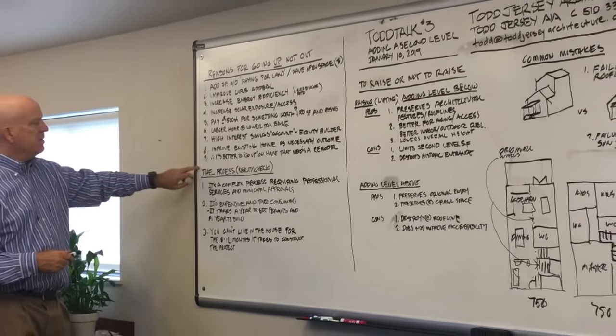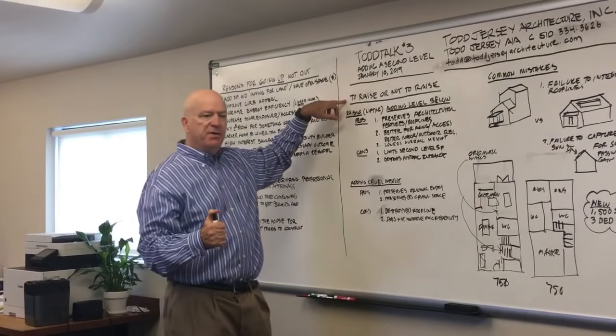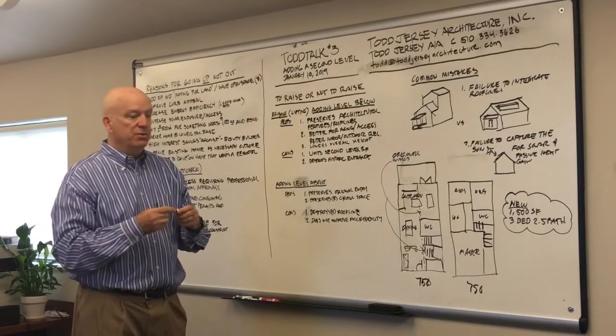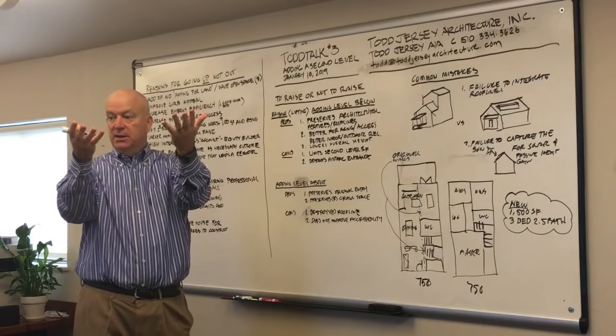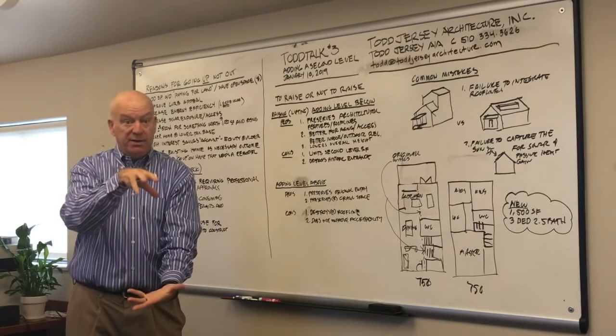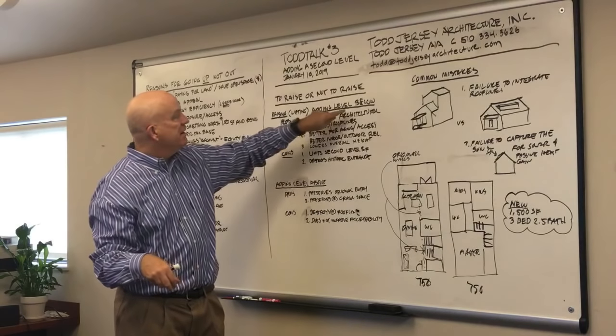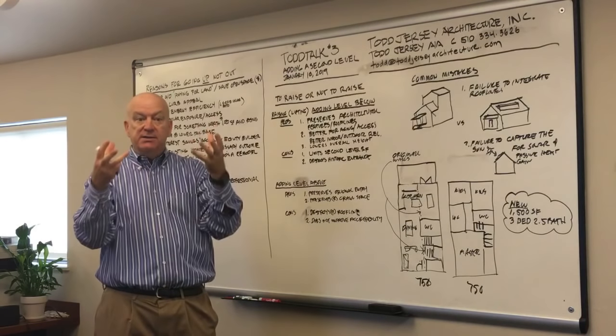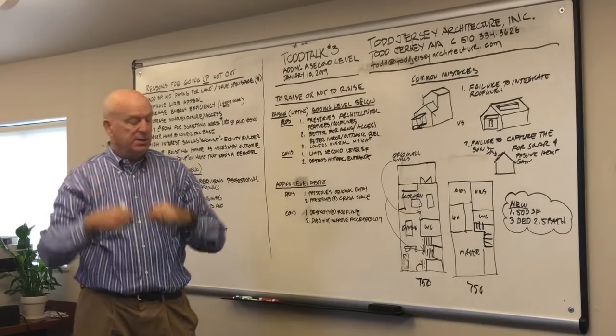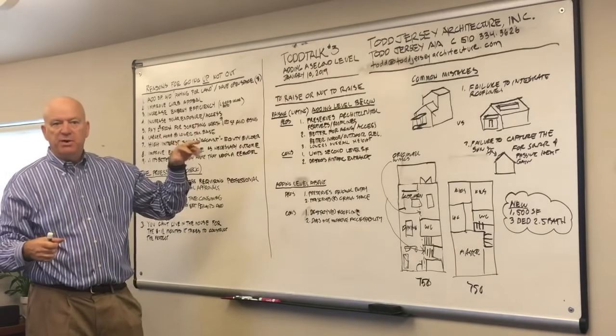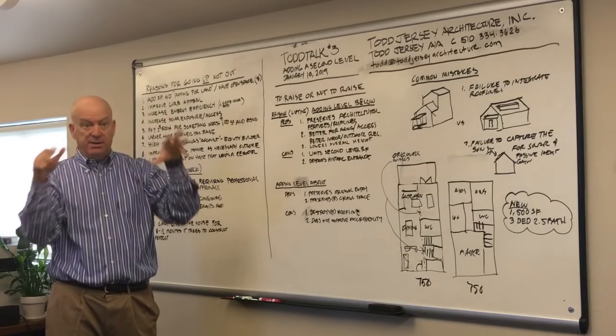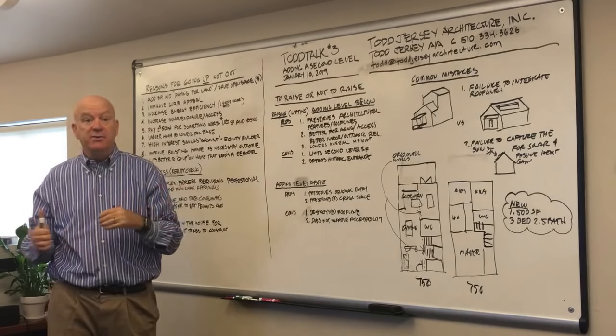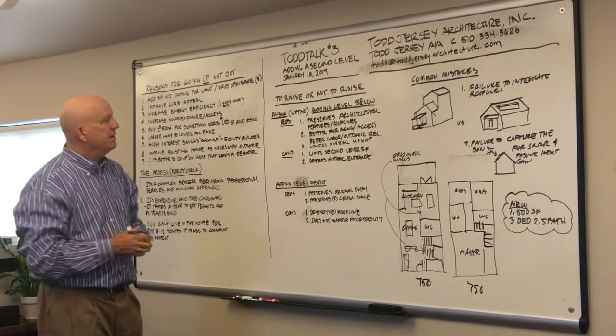After I've convinced you to add a second level, really the next topic is whether you lift the house and you build your second level on the ground level, right? You add a level below the existing house you have. Or you keep the existing house as is and you add above the existing structure. And you see about 25% of the second-story additions in the Bay Area around here are lifts. And about 75% are to keep it as it is. So there are pros and cons of doing both.